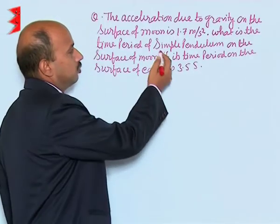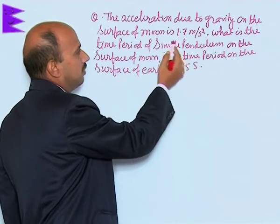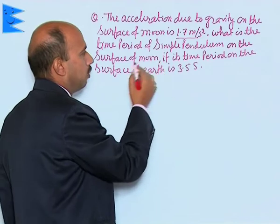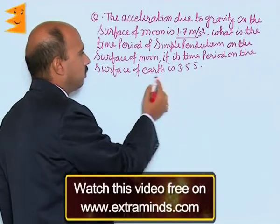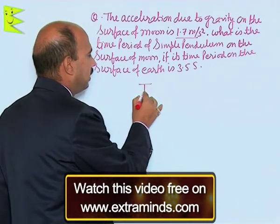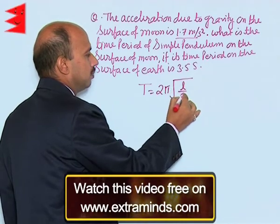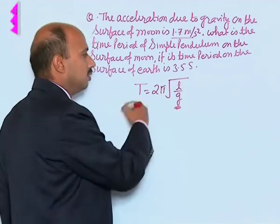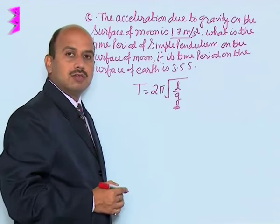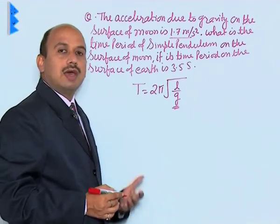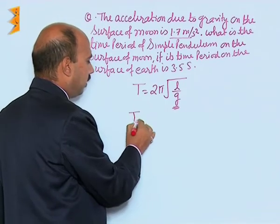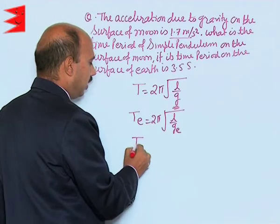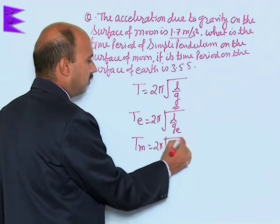The next question: the acceleration due to gravity on the surface of the moon is 1.7 m/s². What is the time period of a simple pendulum on the surface of the moon, if its time period on the surface of earth is 3.5 seconds? We know T = 2π√(l/g). The time period depends on acceleration due to gravity, and since length remains constant, when going from earth to moon the acceleration due to gravity changes. For earth: T_e = 2π√(l/g_e), and for moon: T_m = 2π√(l/g_m).